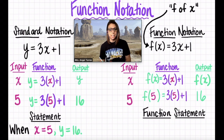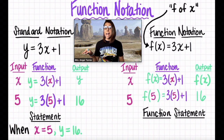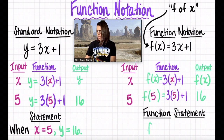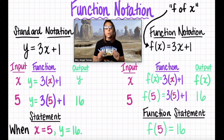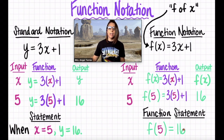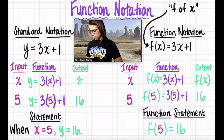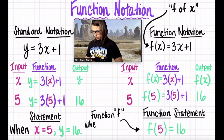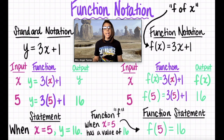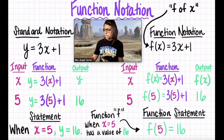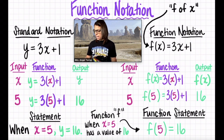Now our output is going to stay the same. 3 times 5 is 15, 15 plus 1 is 16. So our output for this function is still 16. Here's what's interesting and what we're going to practice in this video. The function statement in standard form has to be kind of like a sentence. The function statement in function form is a little bit different. f of 5 equals 16. What we're saying here is that function f, when x is 5, has an output of 16. The cool thing about function notation is that when you write out your final statement, it shows you the function that you used, the input that you used, and its output.